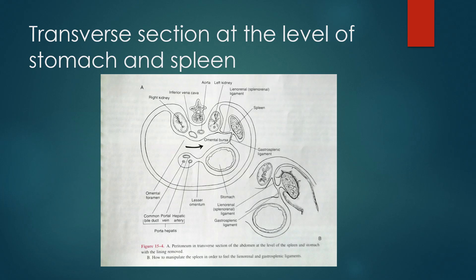This posterior indentation is due to the lumbar vertebra. These are the two kidneys — retroperitoneal structures. This is the inferior vena cava and there is the aorta. These are all retroperitoneal structures and the peritoneum lies in front of them. Here you can see the porta hepatis having the portal vein, the common bile duct, and the hepatic artery.